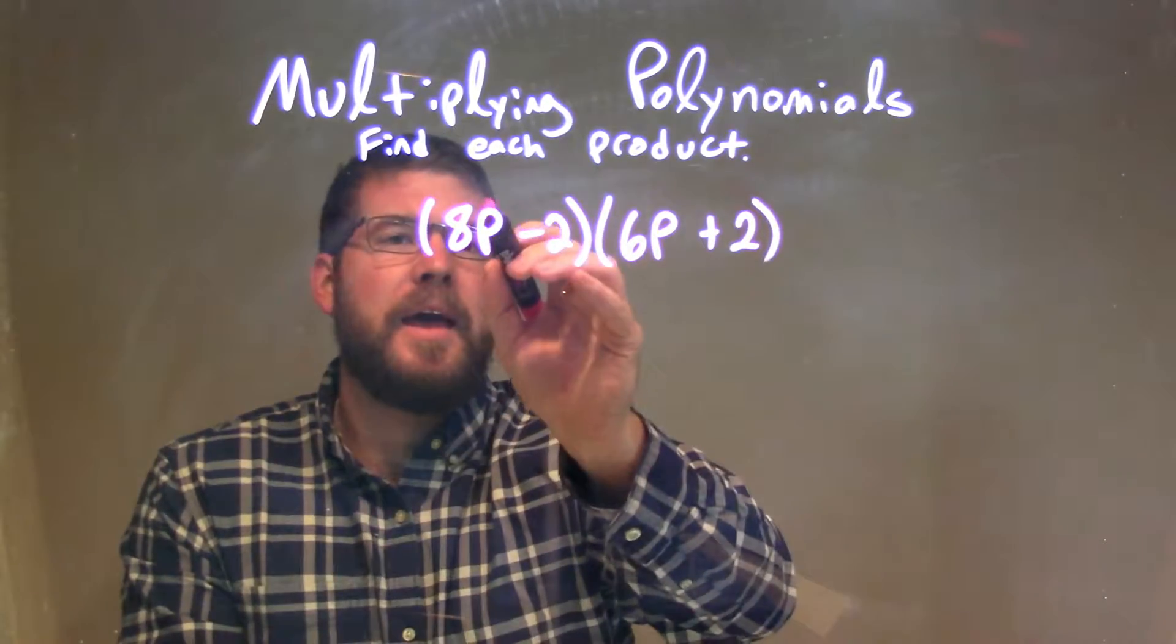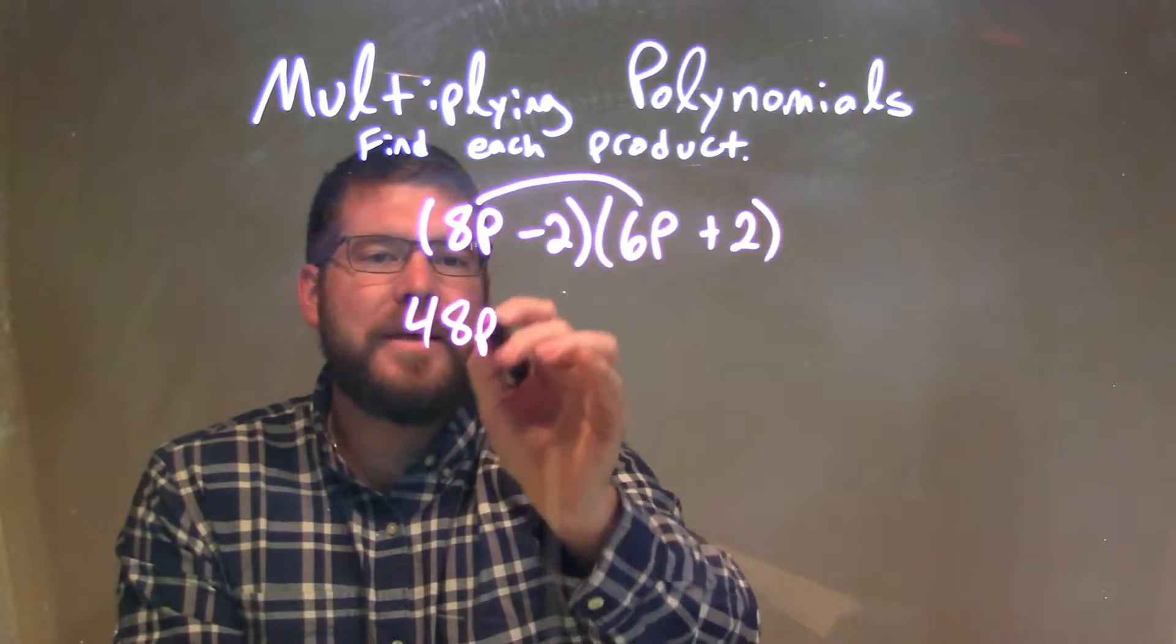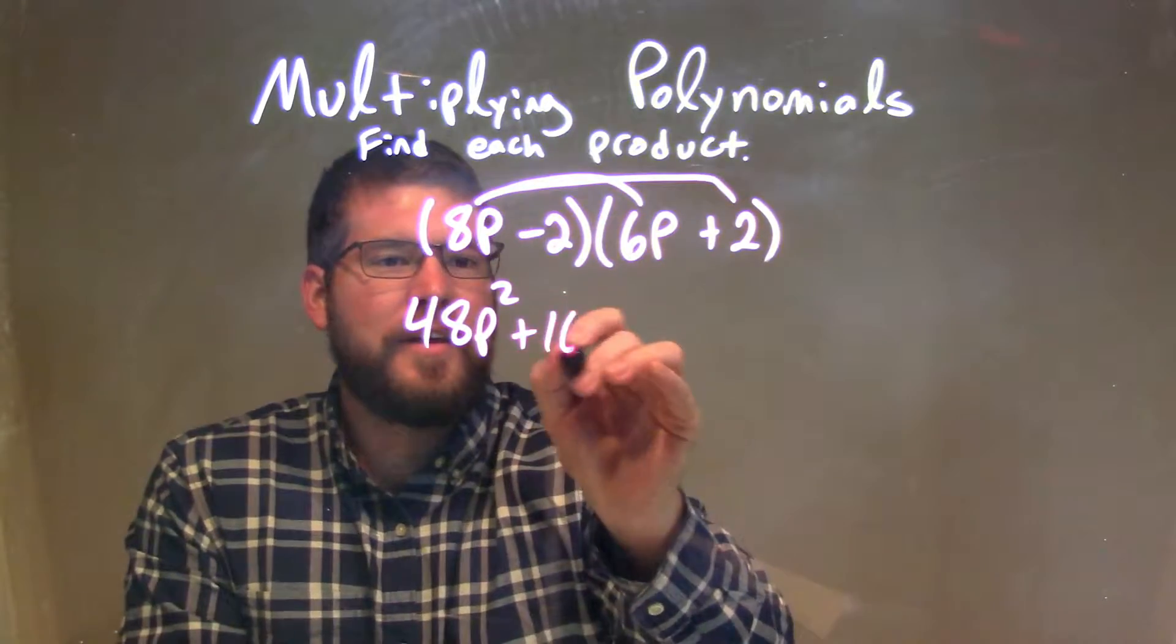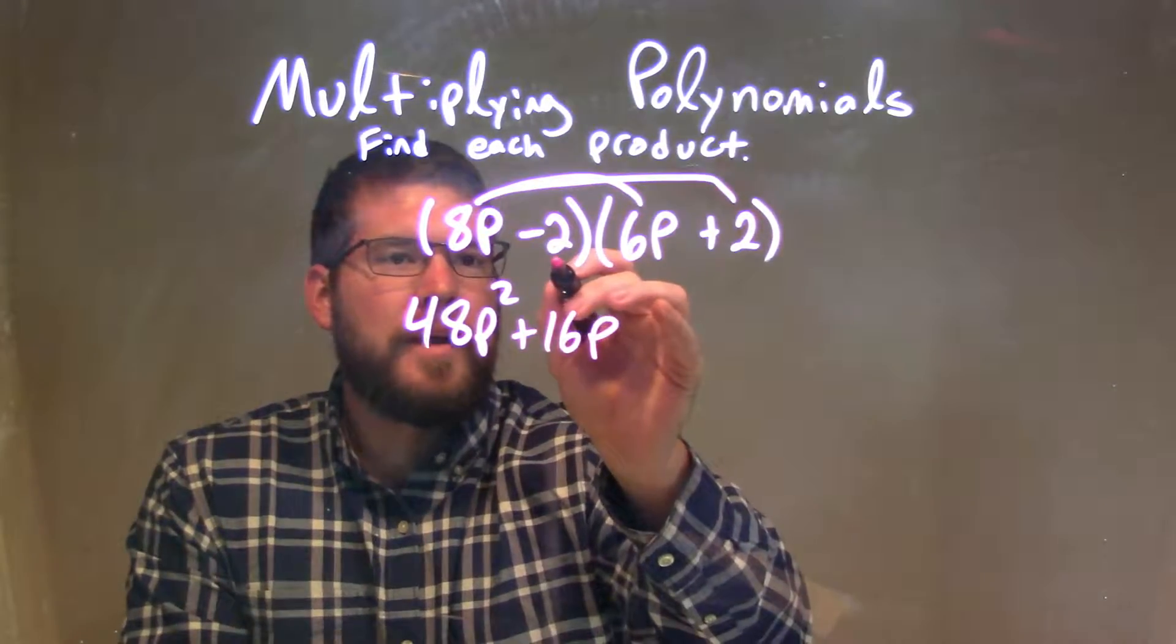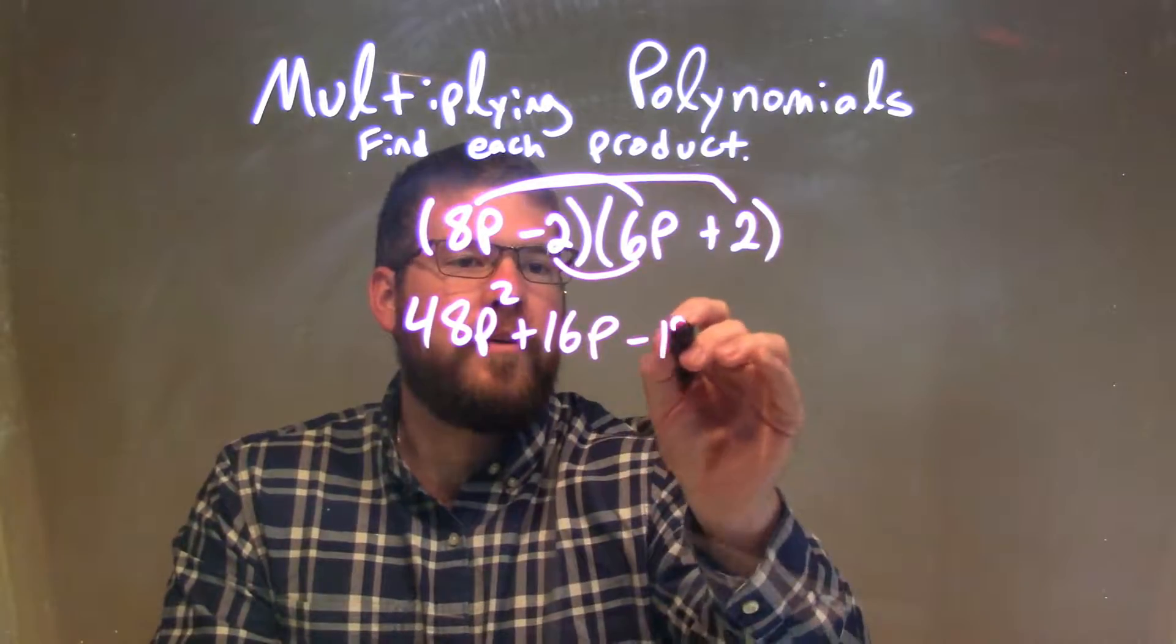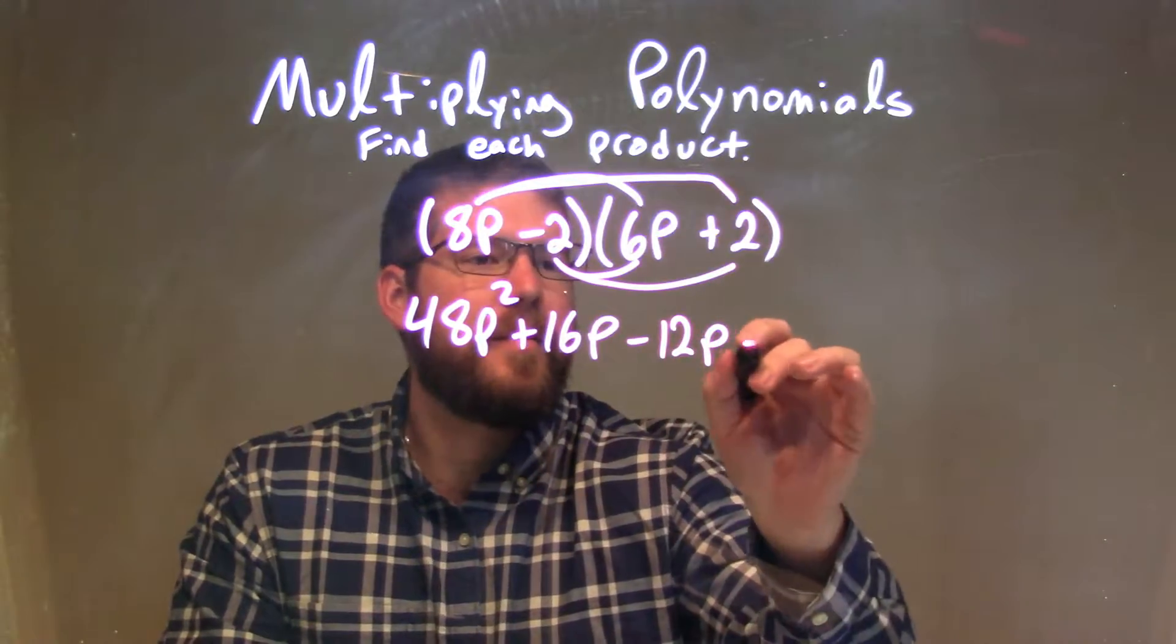So 8p times 6p is 48p squared. 8p times 2 is 16p. Minus 2 times 6p is minus 12p. And minus 2 times positive 2 is minus 4.